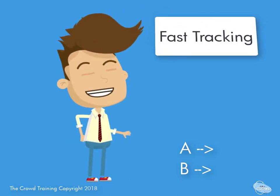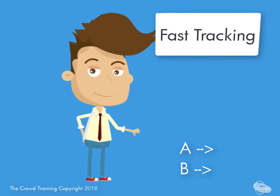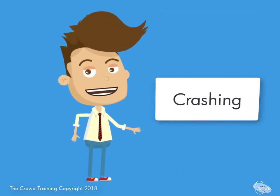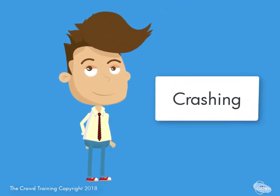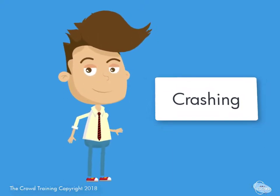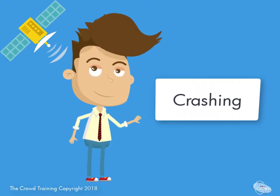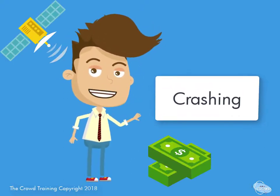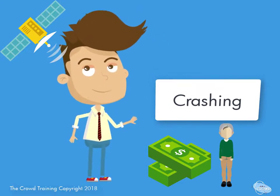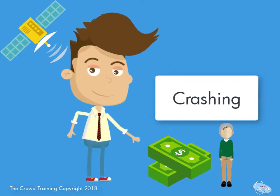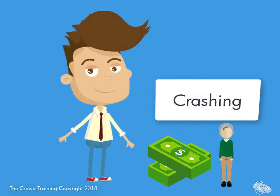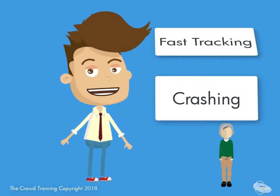That's what we refer to as fast tracking. Now the other one is crashing. The crashing technique means you are throwing more things at it — more resources, more budget, more costs, more people, whatever it might be — to speed things up. Obviously that would cost money, and you could do both in tandem or a variation of each.